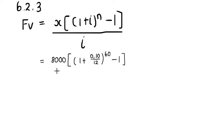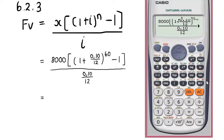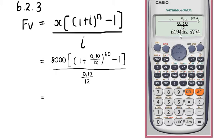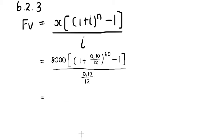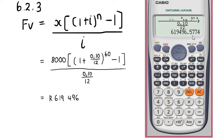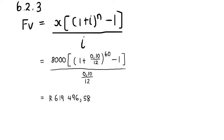Substituting into the future value formula: she deposits R8,000 per month, the sinking fund earns 10% interest compounded monthly, and she makes 60 deposits. We compute 8000 times [(1 + i)^60 - 1] divided by i. Plugging all of this into the calculator gives a final answer of R619,496.58.